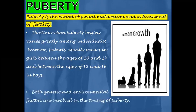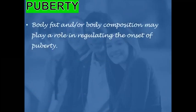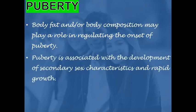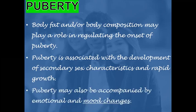Both genetic and environmental factors are involved in the timing of puberty. Sometimes body fat and body composition may play a role in regulating the onset of puberty. Puberty is associated with the development of secondary sex characteristics and rapid growth. Puberty may also be accompanied by emotional and mood changes.